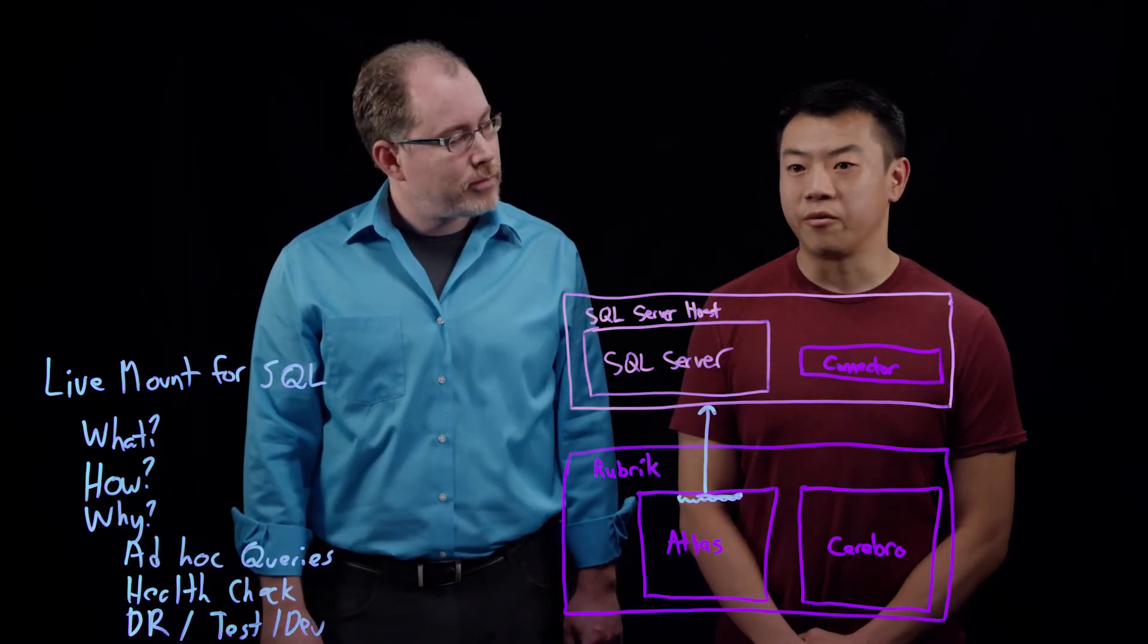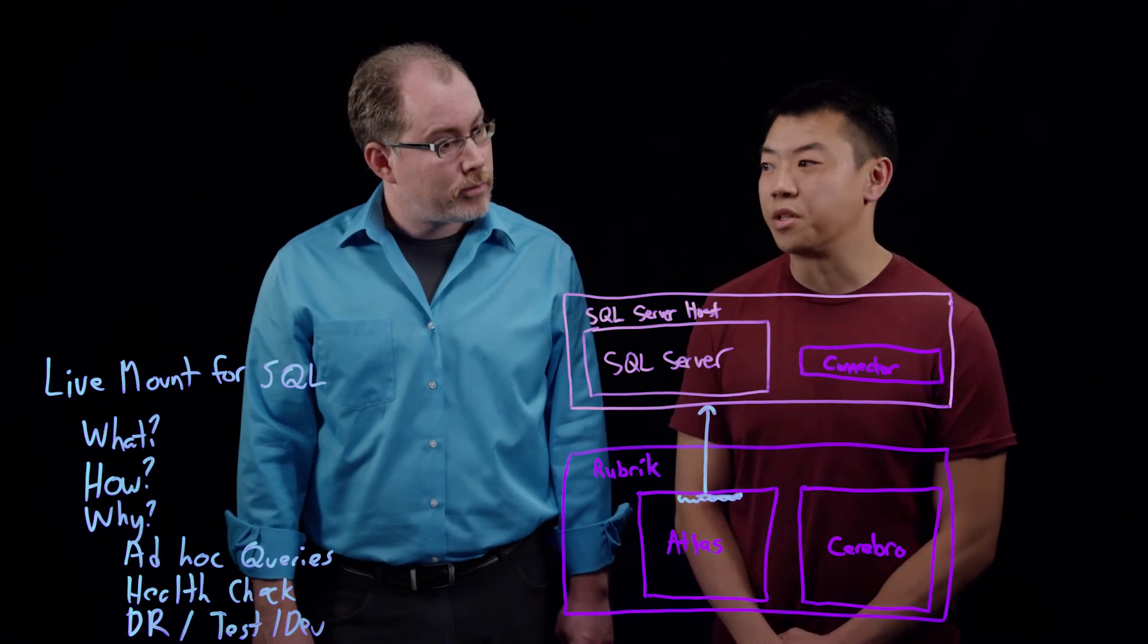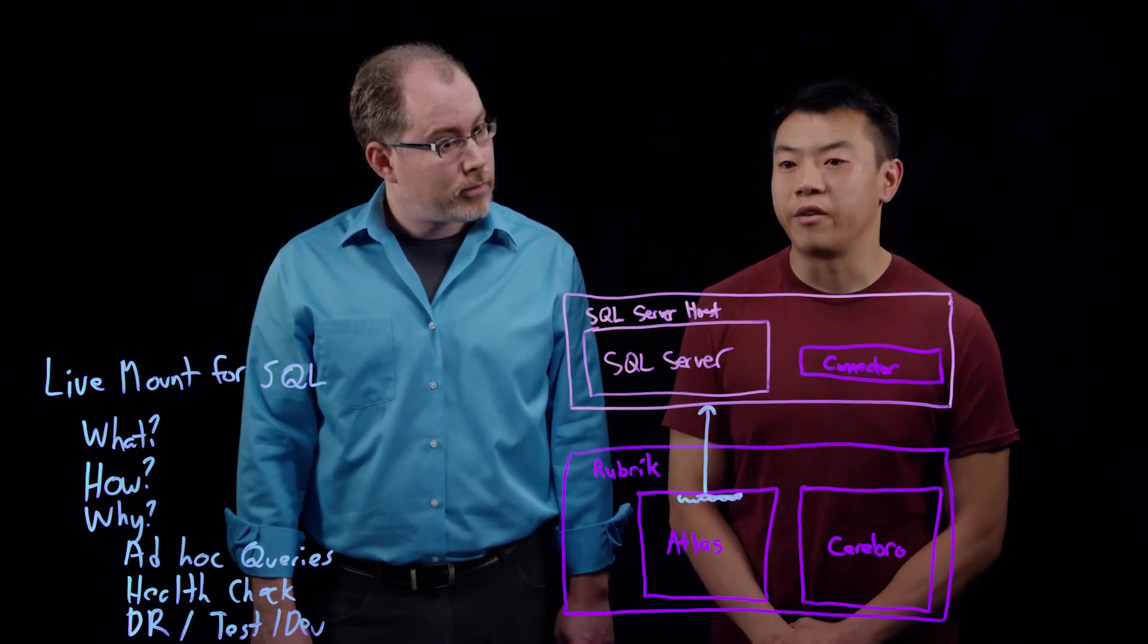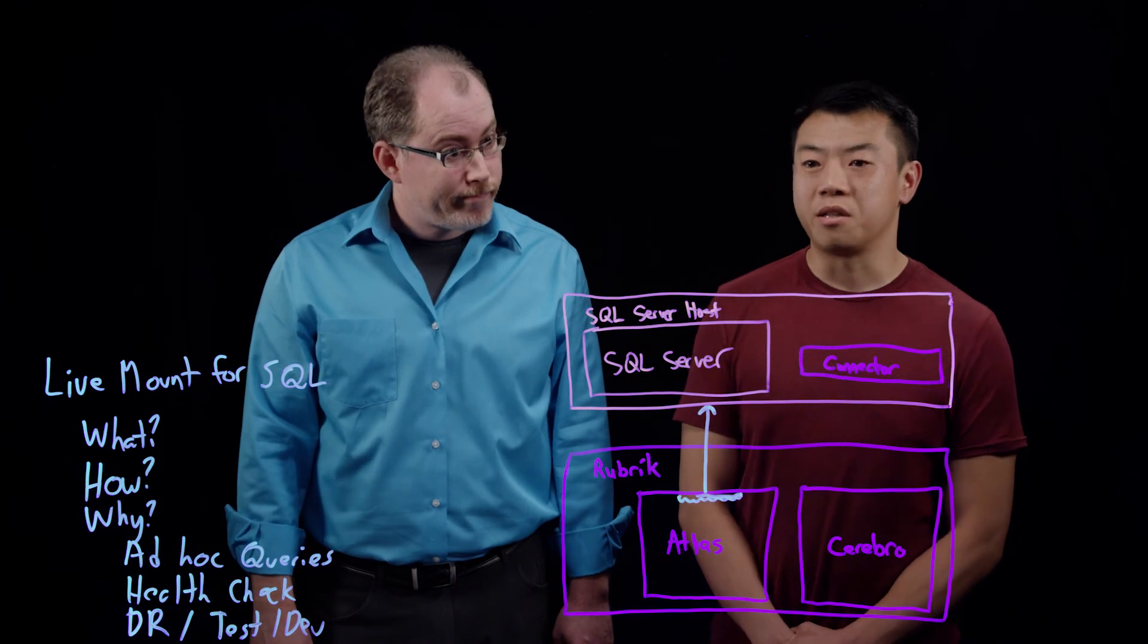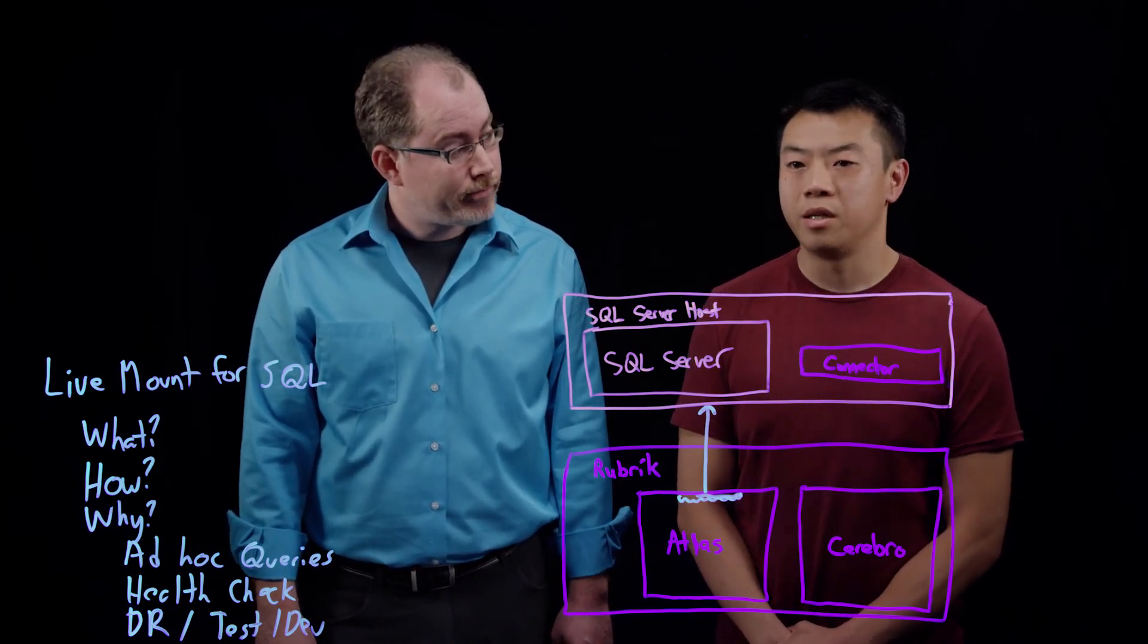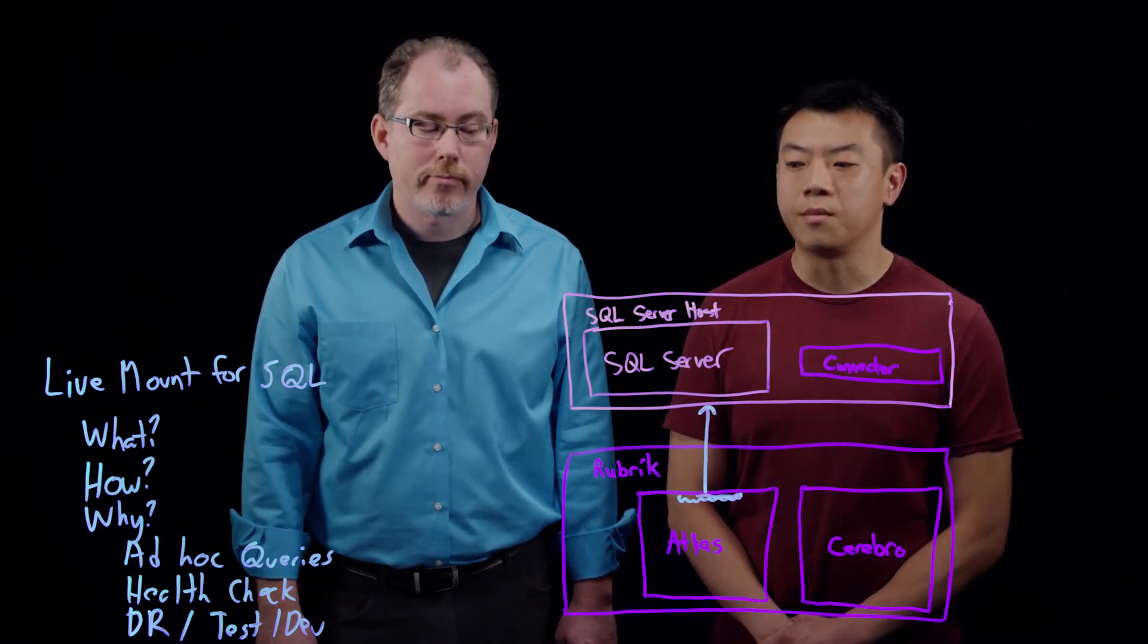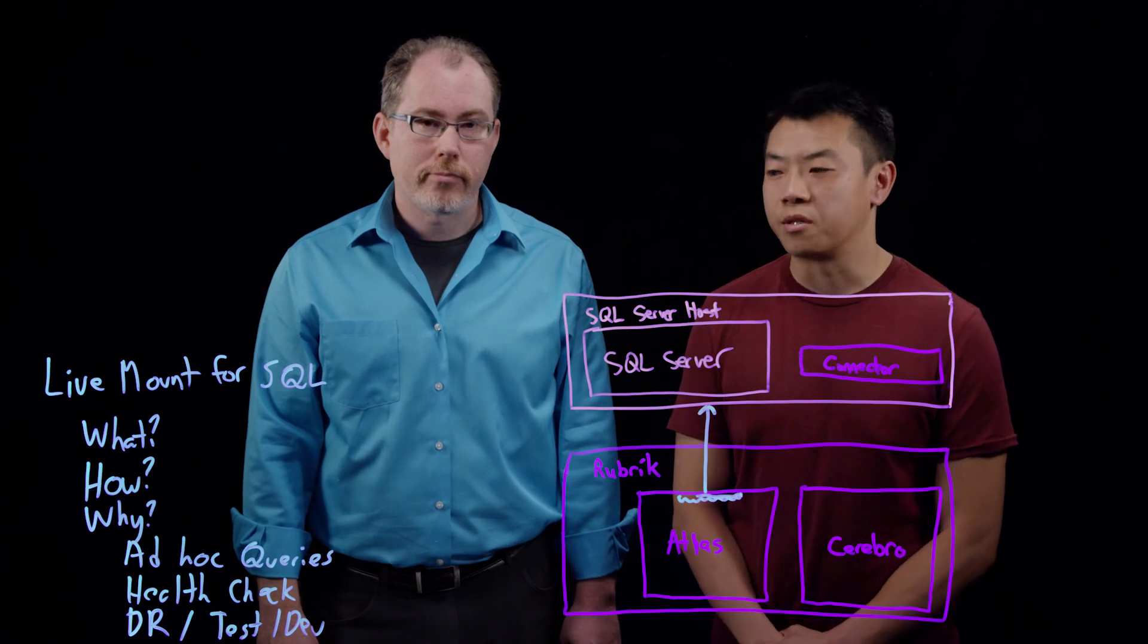But now with Rubrik's live mount feature, life is actually a lot easier. I can in fact instantiate a cloud instance of the SQL server and live mount into that. Then I can run this test on the real production data. This is actually a very strong guarantee to me that since it's using the real data, if this test passes, then I'm very confident that my attempt to update production will be successful.